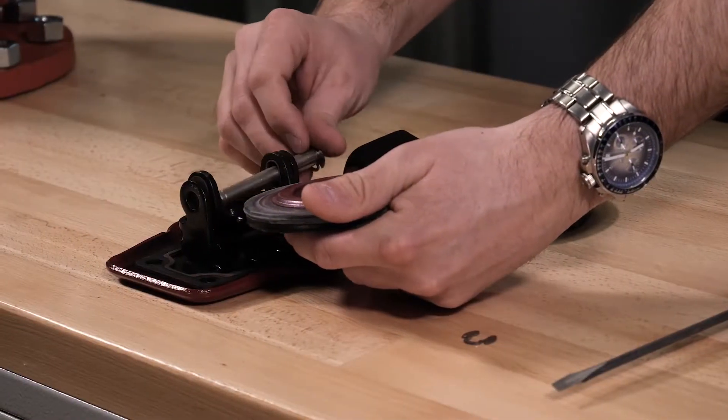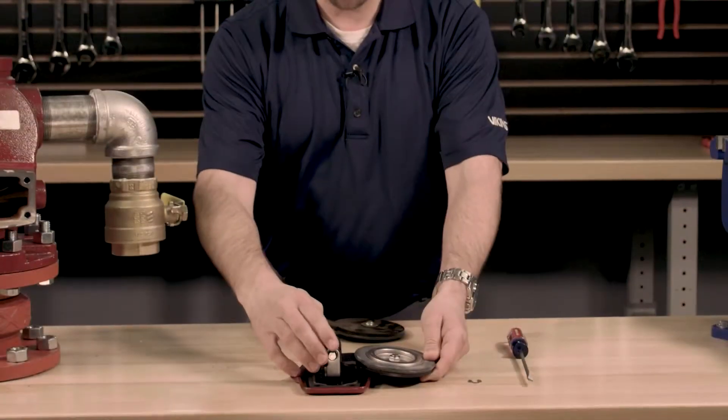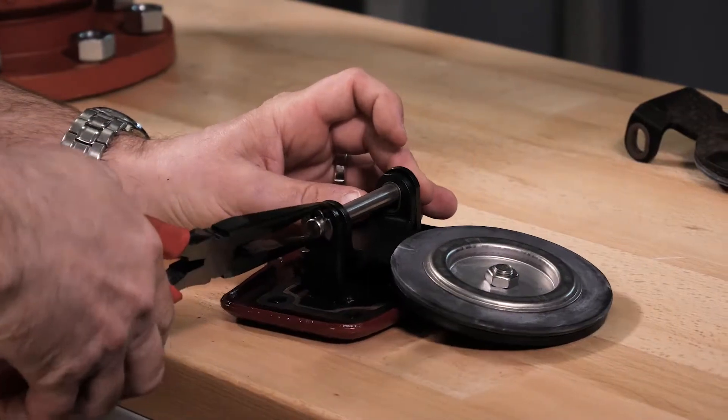With the holes now lined up we can start to reinstall the clapper hinge pin back through the holes in the clapper assembly. Next reinstall the retaining ring.